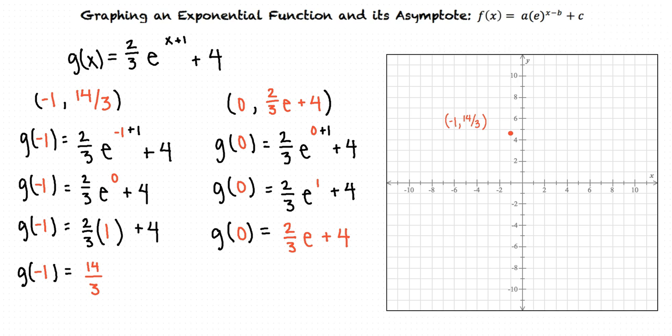If we enter this expression into our calculator, two-thirds e plus four is approximately 5.81, so our point is at approximately (0, 5.81).